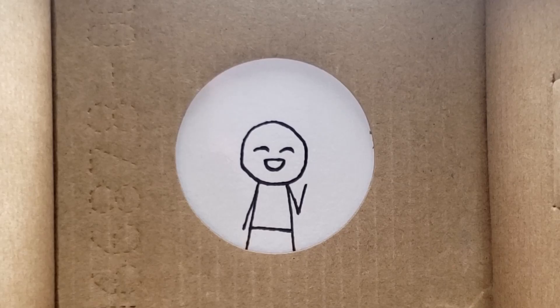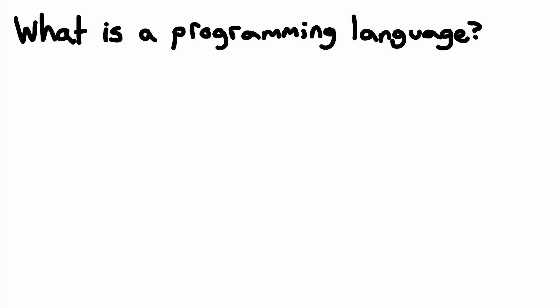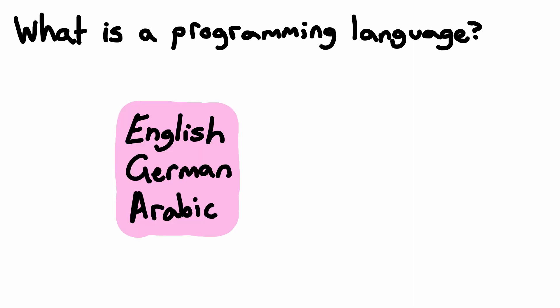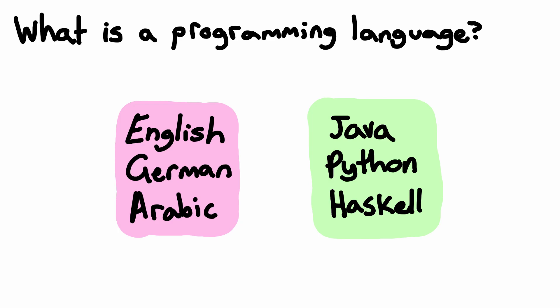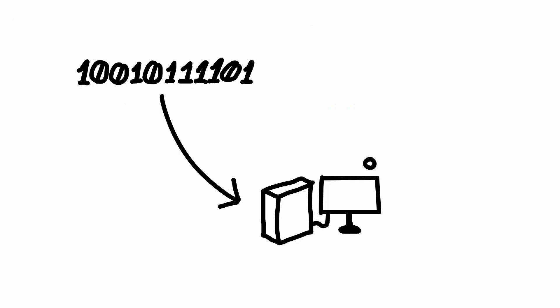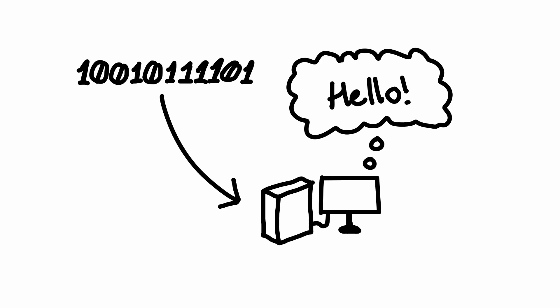So what is a programming language? A programming language is just like any other language. Just like how you can speak English, German, or Arabic, you can talk to a computer using Java, Python, or Haskell. These are all different ways of giving a computer instructions, and each one has its pros and cons.